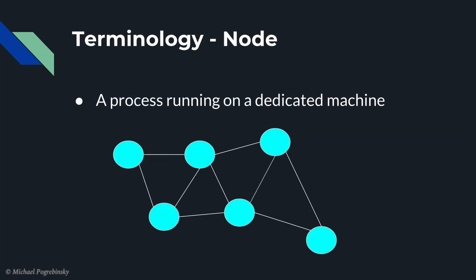The first one is a node. A node is simply a process running on its dedicated machine as part of a distributed system. This term originally comes from graph theory. In our case, when two nodes have an edge between them, that means that those two processes can communicate with each other through the network.